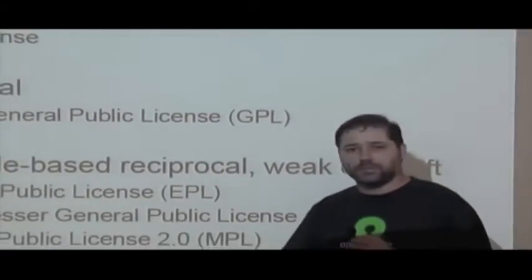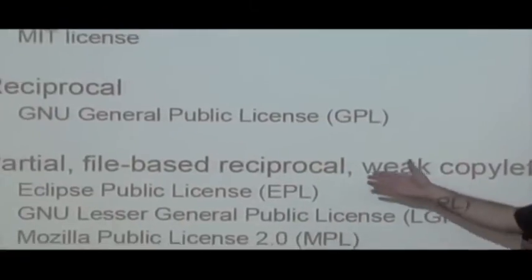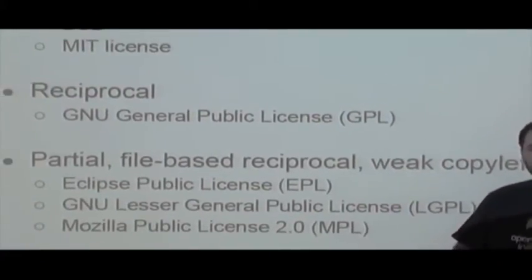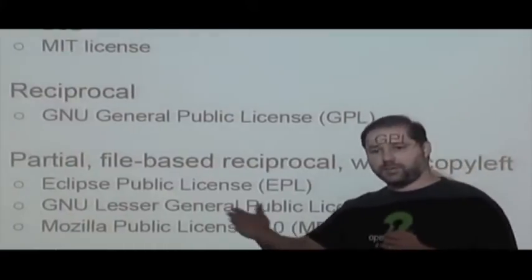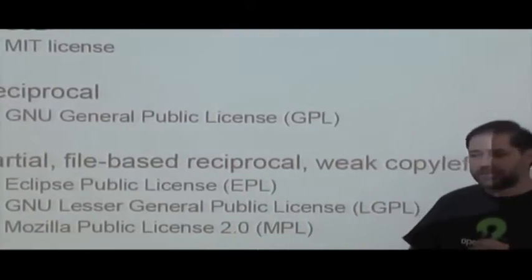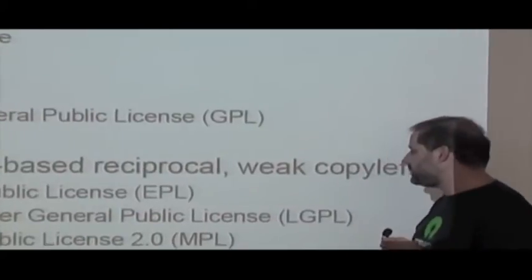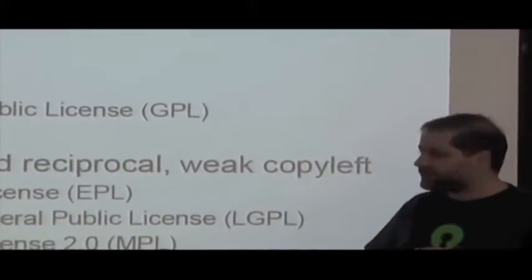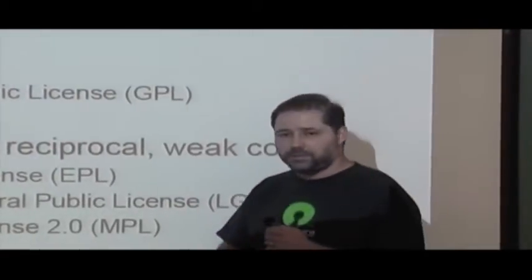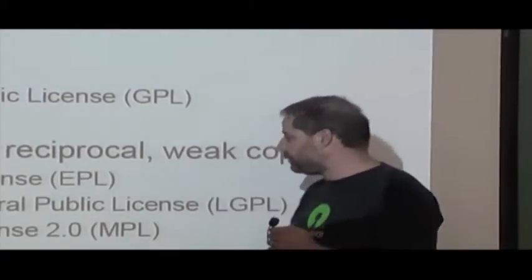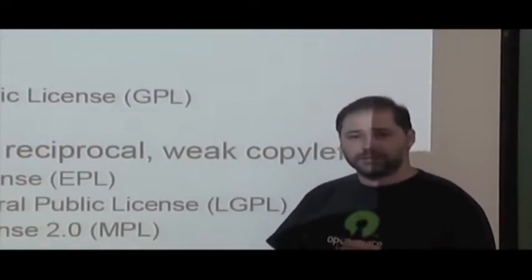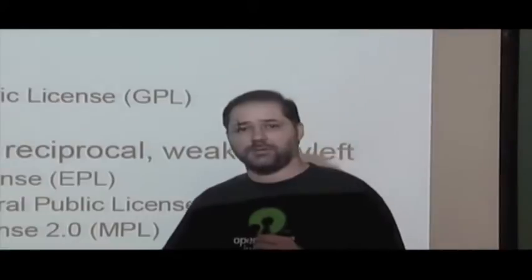For partially reciprocal licenses, important examples include the Eclipse Public License (EPL), the LGPL — which is based on the GPL and extremely well-used — and the Mozilla Public License, which also has many derivatives and is widely used.